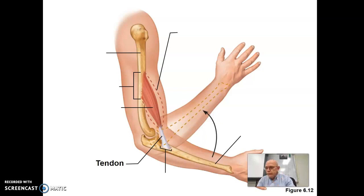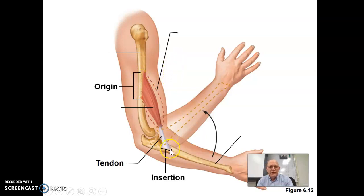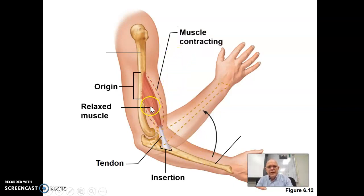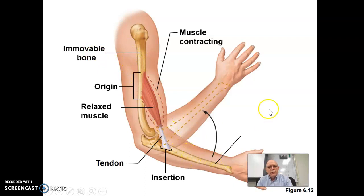On your drawing: the origin is where the muscle is attached to the immovable bone, and the insertion is where it's attached to the movable bone. When your muscle is relaxed it's spread out, and that allows your arm to go down. When it contracts it bunches up and pulls your arm up. The immovable bone is up here, and down here is your movable bone. Make sure you have those labeled correctly — that will almost certainly be on the test.